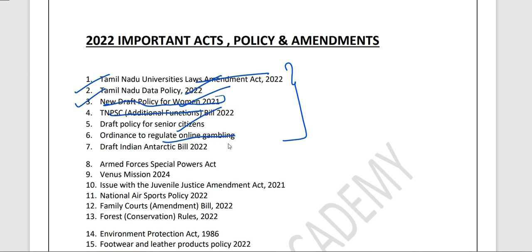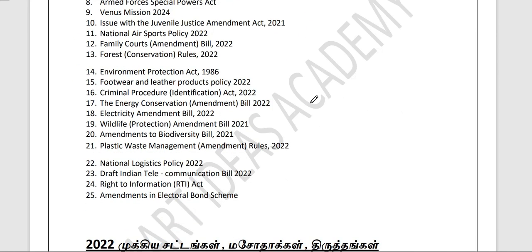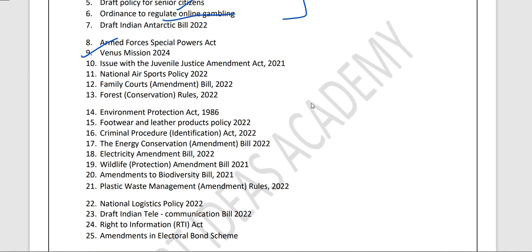This is already in the PDF, and we share it on Telegram as part of the current affairs classes. We missed a lot of schemes, which we covered in October, so in November this is extra. For example: Forest Conservation, Environment Protection, Food Wear and Leather Product Policy, Energy Conservation, Electricity Amendment, Wildlife, Biodiversity, and Plastic Waste Management Amendment Rule.